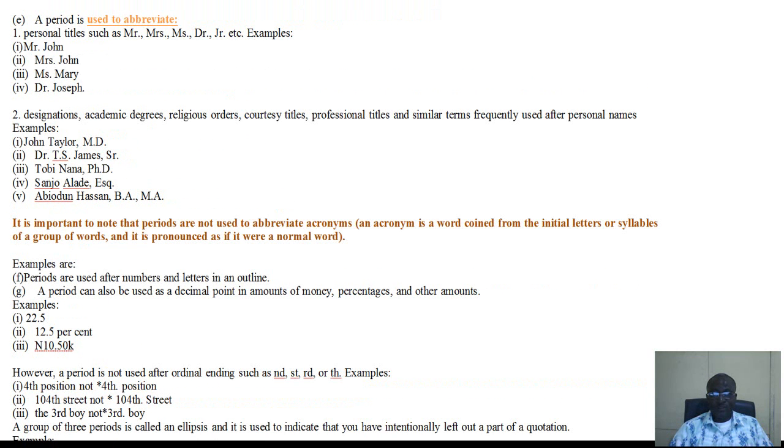The full stop is used when we have designations, for example academic degrees, religious orders, courtesy titles, professional titles, and so on. You have John Taylor, comma, M period D period, that means John Taylor the medical doctor. That's how the Americans differentiate between a professional medical doctor or an academic medical doctor. You also have Tobi Nana, PhD standing for Doctor of Philosophy.